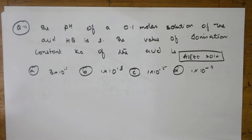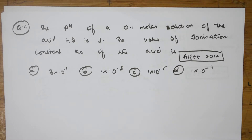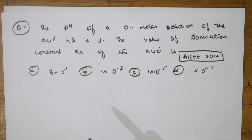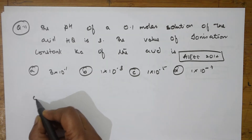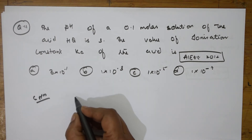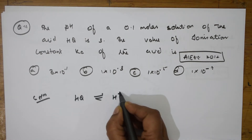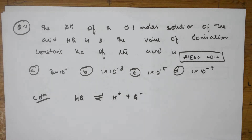Let's see the next question. This is a 2012 AIPMT equation: the pH of a 0.1 molar solution of the acid HQ is 3. The value of ionization constant Ka for the acid is to be found from four options. So I need to find Ka for HQ. First of all, write the dissociation: HQ dissociates into H⁺ and Q⁻.